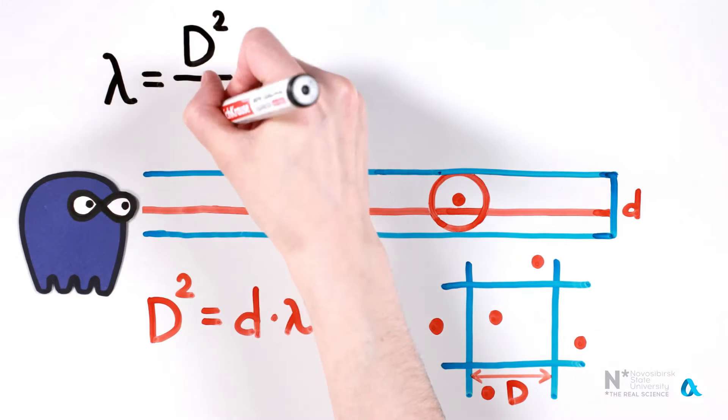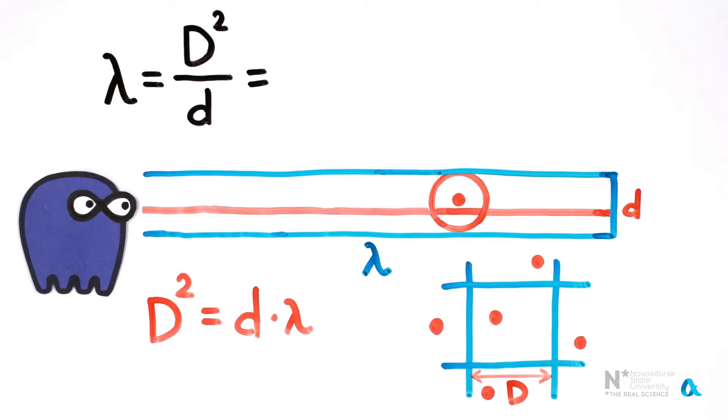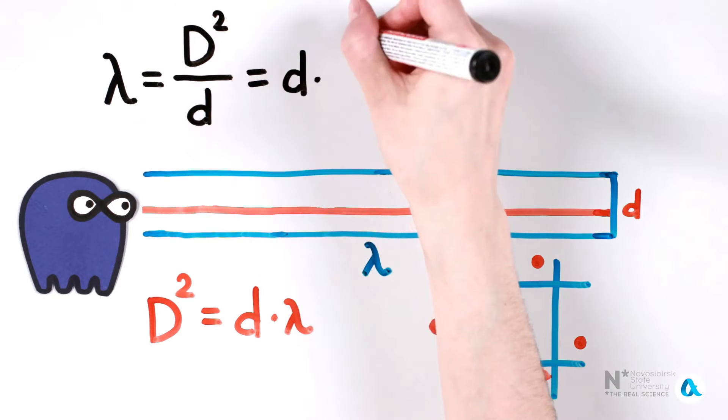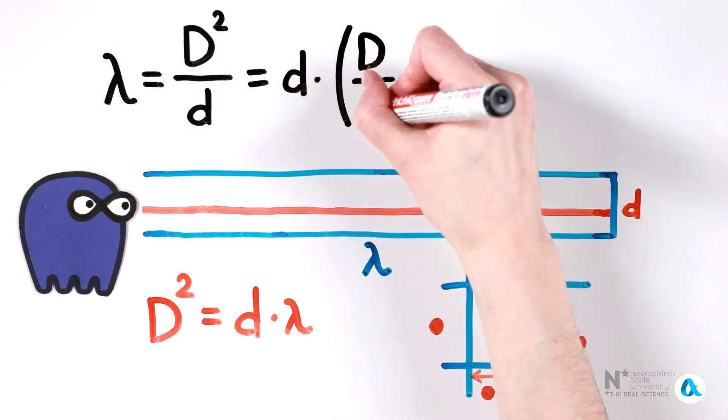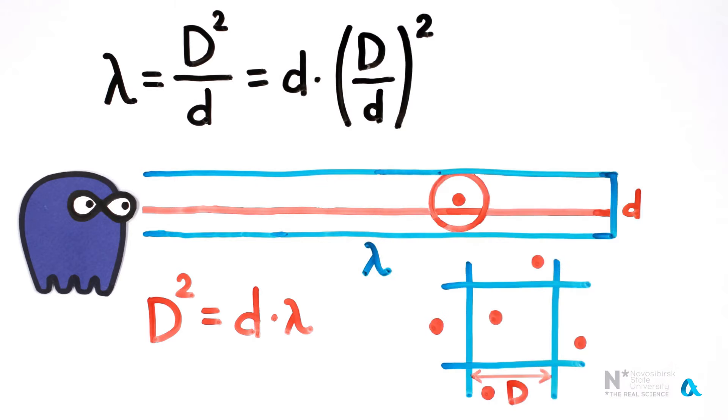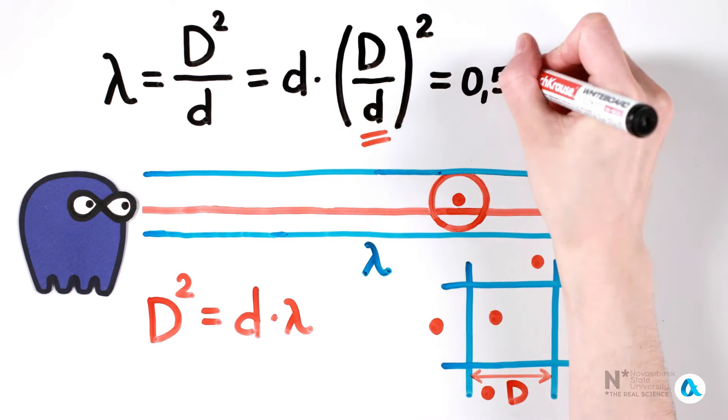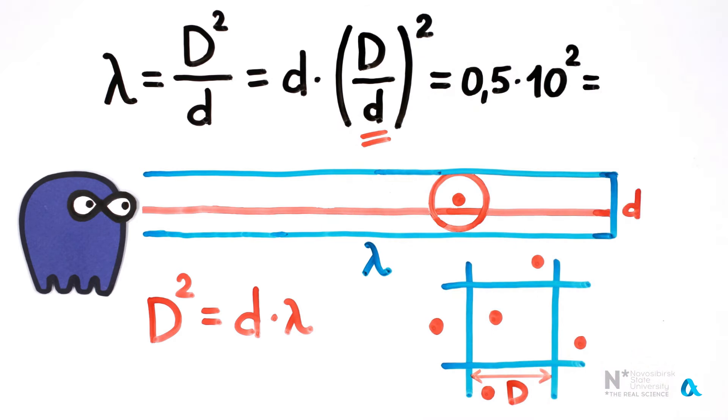This formula can be conveniently rewritten as the diameter of the tree d multiplied by the square of the ratio of the distance between trees d to the diameter of the tree d. And this is simply the fraction of the forest area occupied by the tree trunks. Let's take the diameter of a tree as half a meter and the distance between trees as 5 meters, which is 10 times greater.